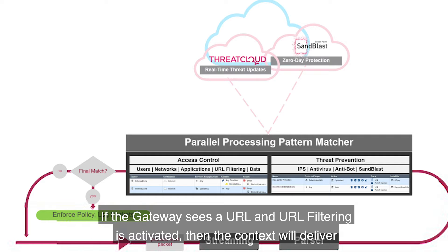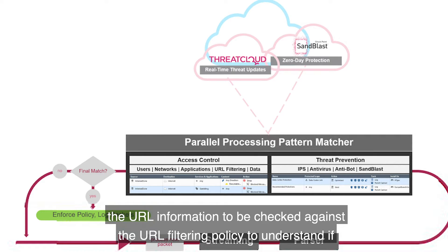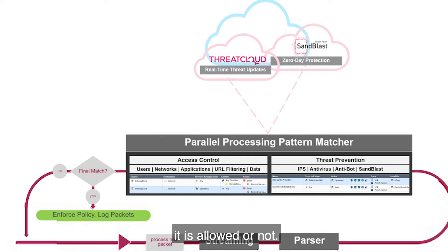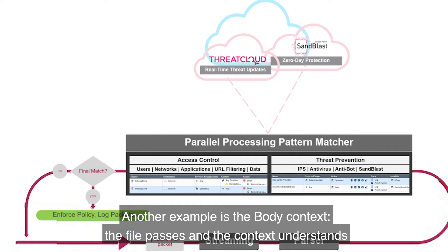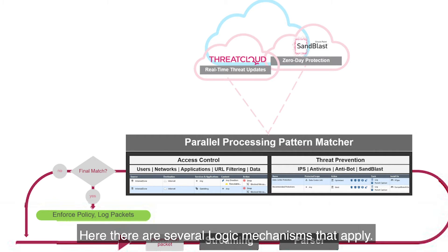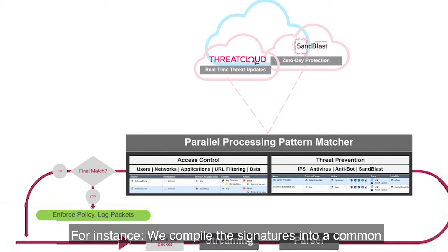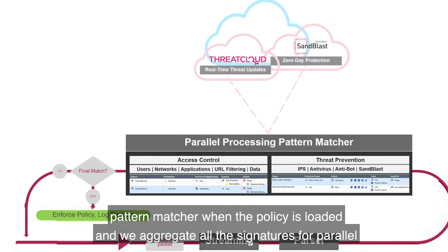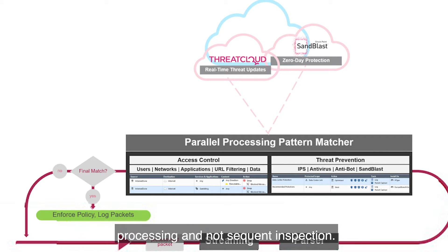If the gateway sees a URL and URL filtering is activated, then the context will deliver the URL information to be checked against the URL filtering policy to understand if it's allowed or not. Another example is the body context: the file parser understands the headers, requests and replies to the data within the body. Here, there are several logic mechanisms that apply. For instance, we compile the signatures into a common pattern matcher when the policy is loaded, and we aggregate all the signatures for parallel processing and not sequential inspection.